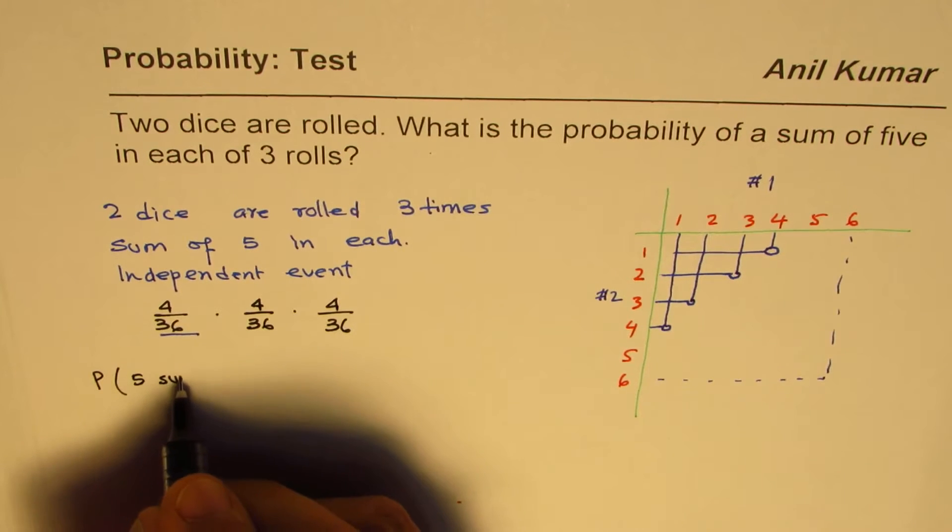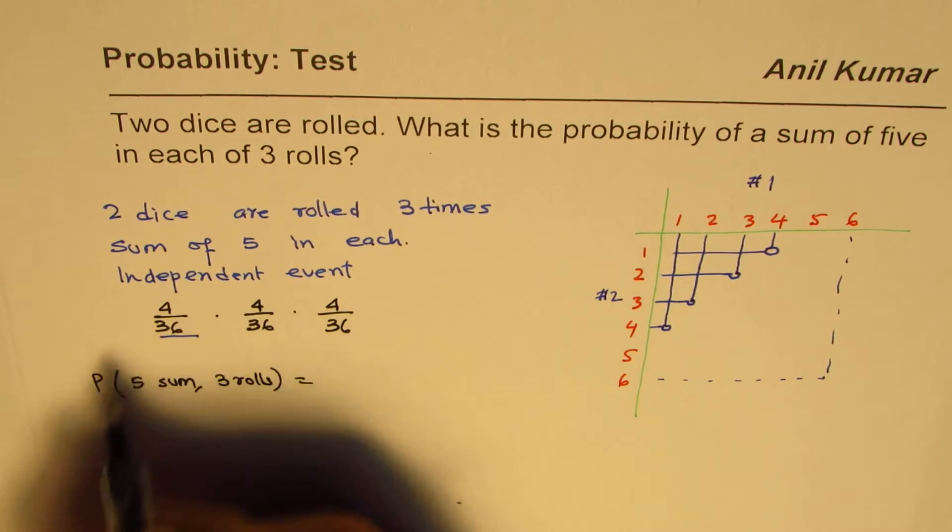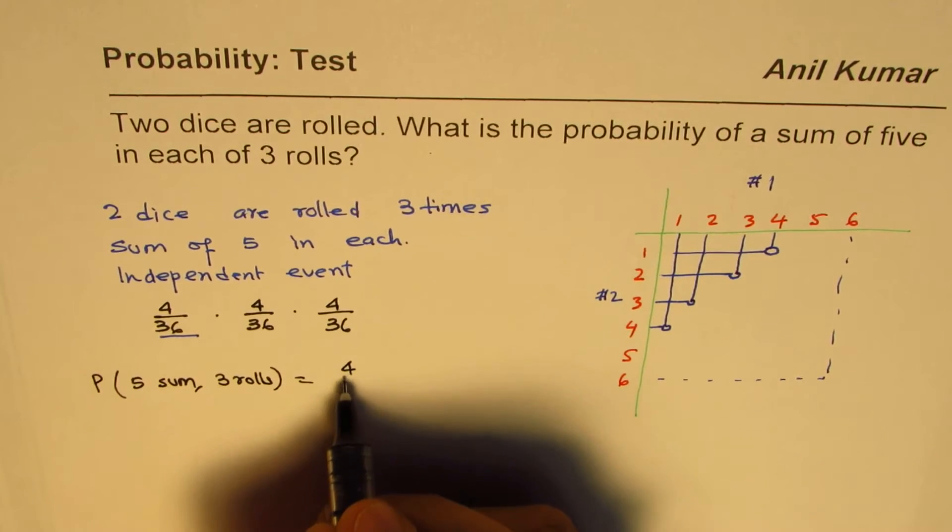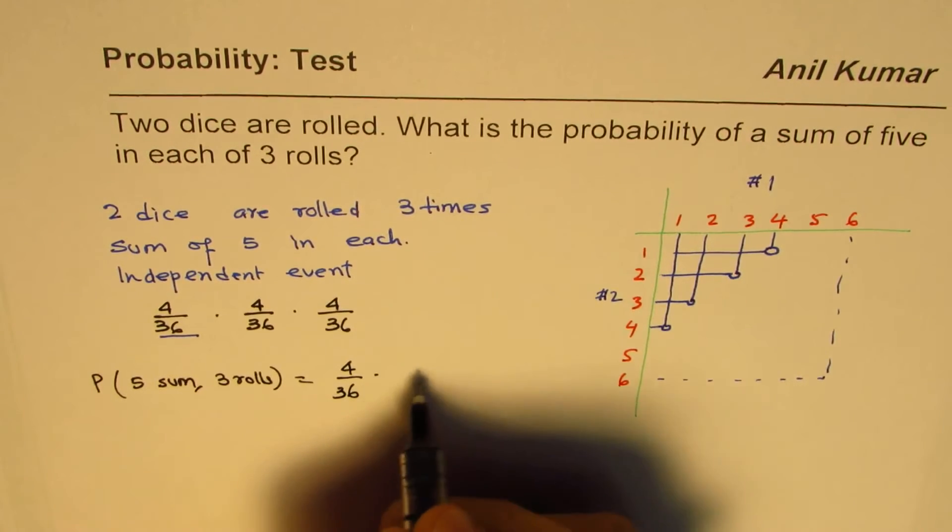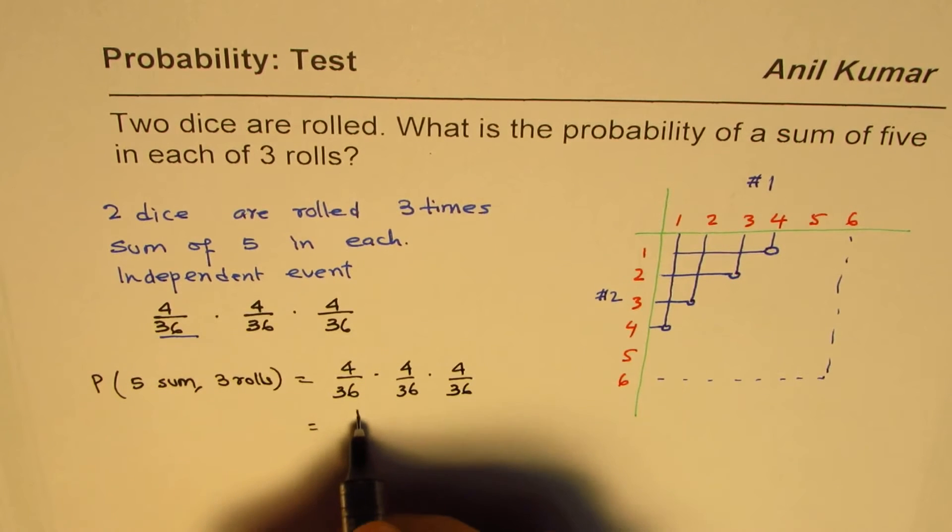So we can write down that the probability for five sum in three rolls equals the product of these from counting principles. So it is 4 over 36 times 4 over 36 times 4 over 36, which is 1 over 9 cubed. You could write 1 over 9 times 1 over 9 times 1 over 9.